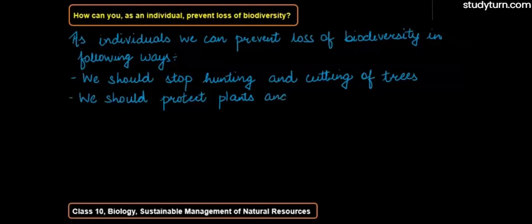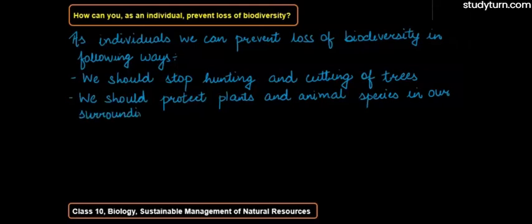We should stop hunting and cutting of trees, and we should protect the plants and animal species in our surroundings. The animals and plants which are present in our surroundings — we should protect them. This is how we can prevent loss of biodiversity.